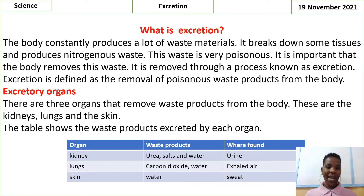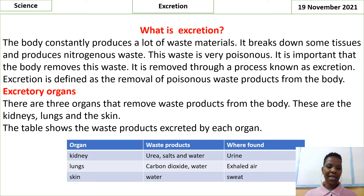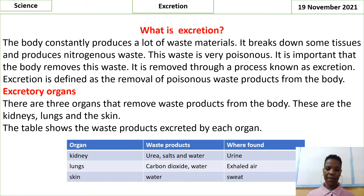Objectives. By the end of this lesson, you should be able to define excretion as the removal of poisonous waste products from the body. Identify organs of excretion — that is the kidney, lungs and the skin. State the functions of the excretory organs. Describe the importance of excretion in the body. Identify and label the structure of the urinary system — that is the kidney, ureter and bladder. State the functions of the named parts of the urinary system.